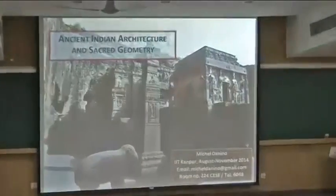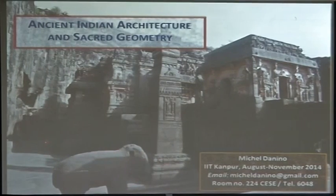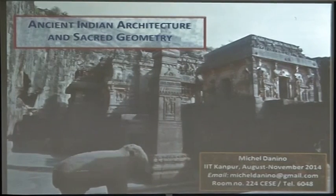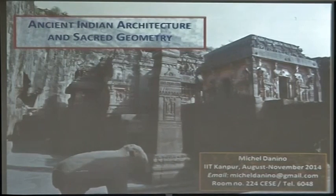Let me start with this beautiful temple — the Kailash temple at Ellora, which some of you would have recognized. It is unique in India. You can see a tourist here — that little white dot gives you the scale. It is just colossal. What is unique about this temple from a technological point of view is that this is not a construction; this is a sculpture. The whole hillside has been sculpted, and approximately a hundred thousand tons of rock was removed, chipped away by generations of sculptors.